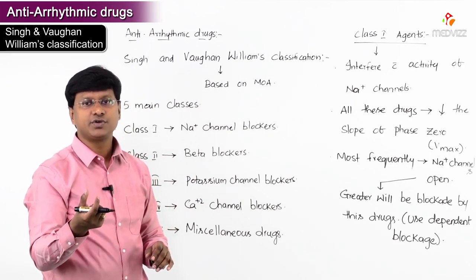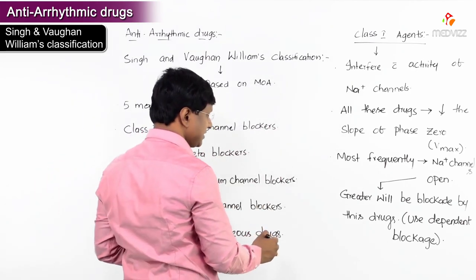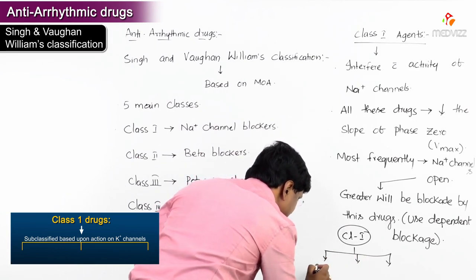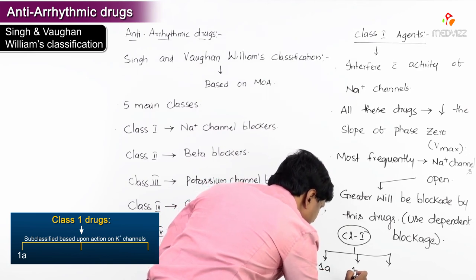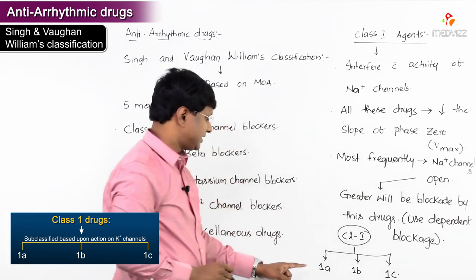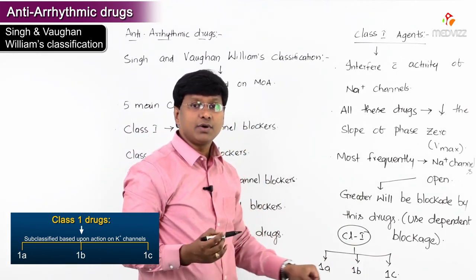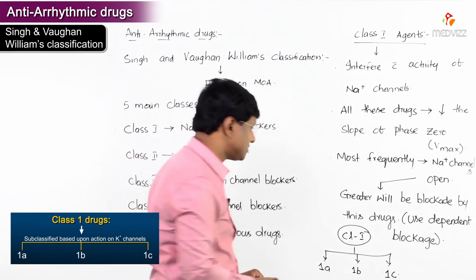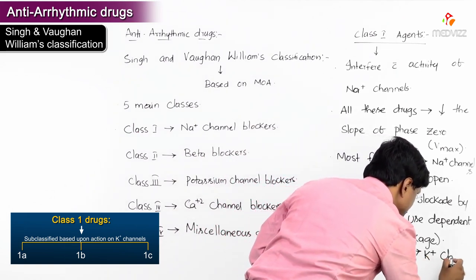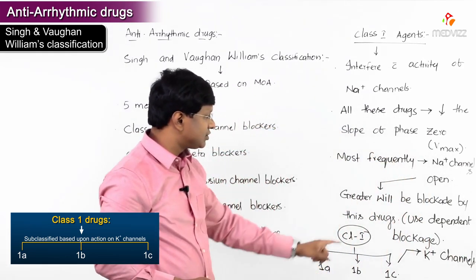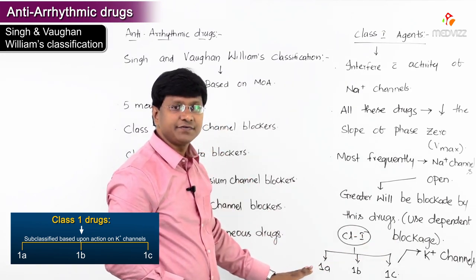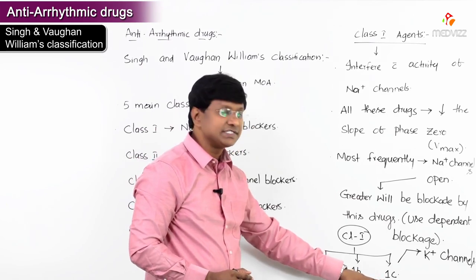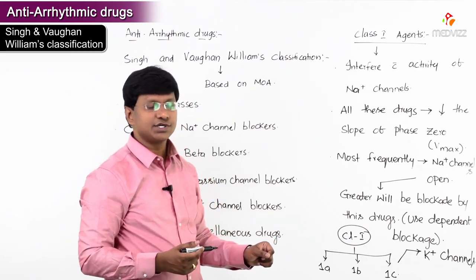Class 1 agents are further classified according to the action of these drugs on the potassium channels. Class 1 is subclassified into three types: Class 1a, Class 1b, and Class 1c. These subclasses are determined according to the action of these drugs on the potassium channels.